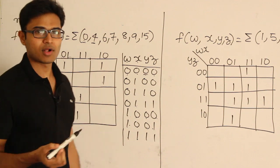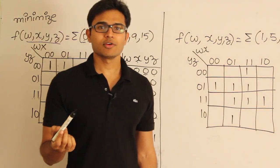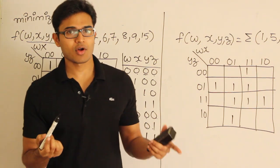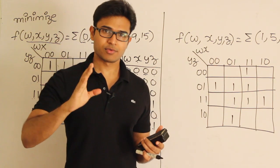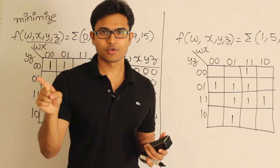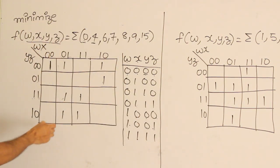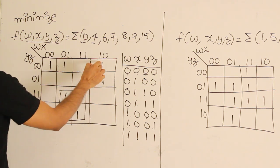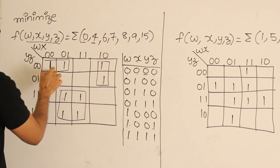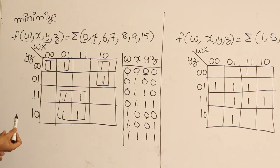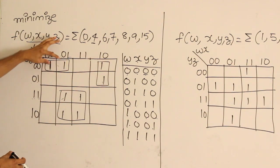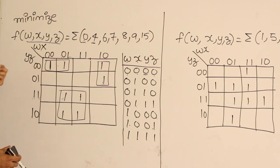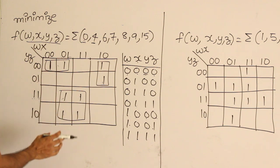Now you try to minimize it. Minimization means you cover all these 1s with as few subcubes as possible, and the subcubes should be as large as possible. You can cover all of this with one subcube, and this one with another subcube. It's not possible to go beyond size 4 here, and 4 is the maximum.